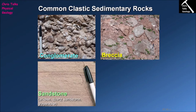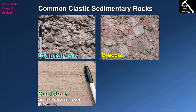The next type of common sedimentary rock is sandstone, and unsurprisingly sandstones form from sand-sized clasts. The majority of sandstones are quite well layered, and sandstones are split into three very broad subgroups. The first is called an arkose sandstone. Arkose sandstones tend to have clast sizes towards the coarse end of the spectrum and contain equal to or greater than 25% feldspar in the rock.